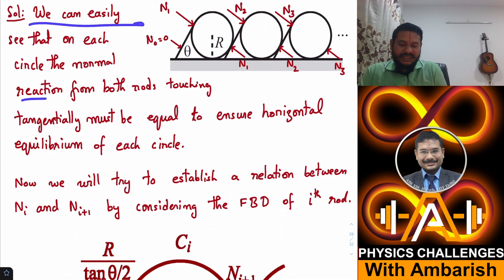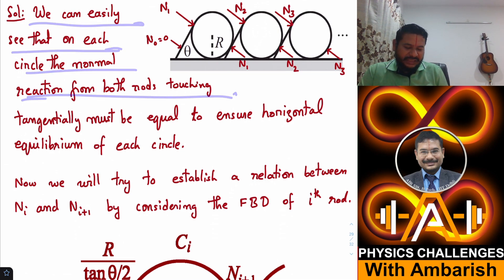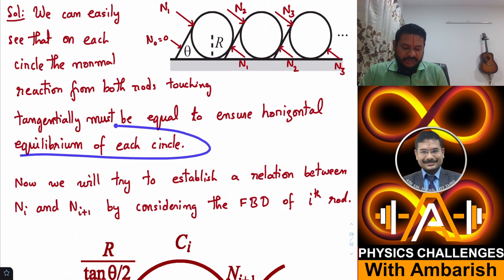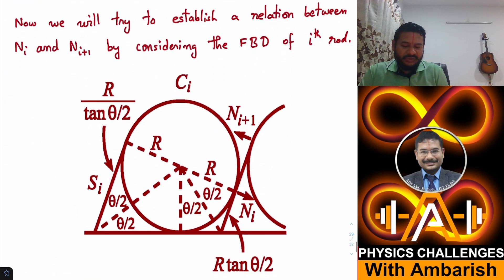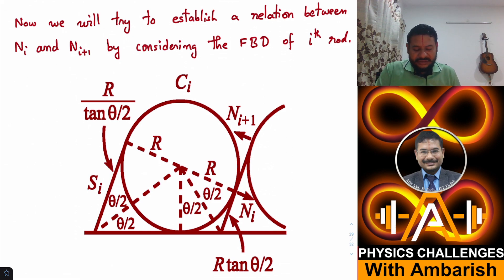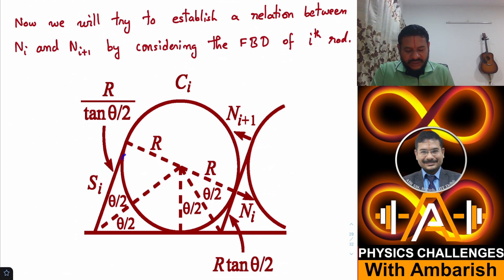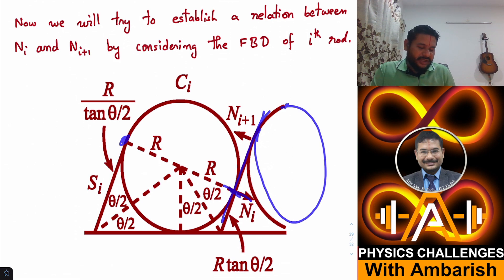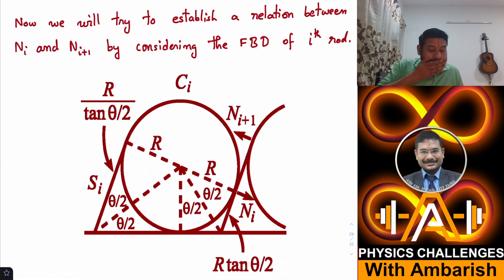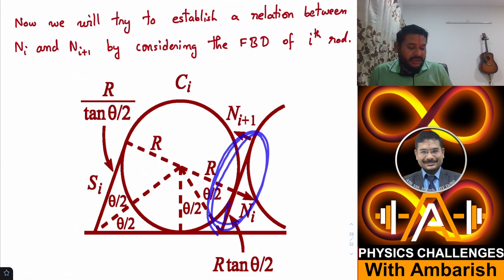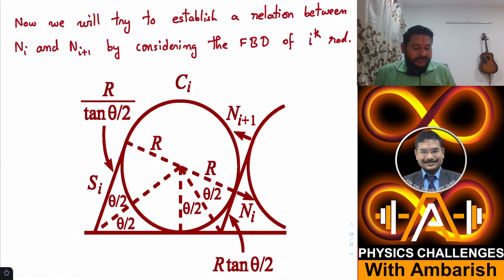On each circle the normal reaction from both rods touching tangentially must be equal to ensure horizontal equilibrium. Now I will establish a relation between Ni and N(i+1). I'm considering the ith circle with normal reactions from both sides, and the (i+1)th circle where the rod applies N(i+1). I'll use the torsional equilibrium of the ith rod to find the relation between N(i+1) and Ni.